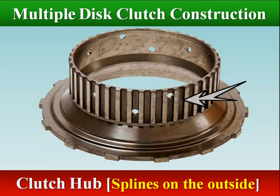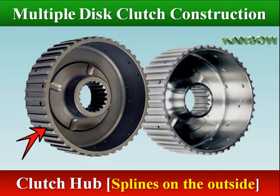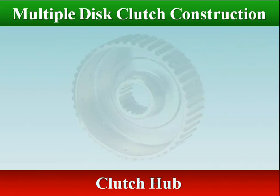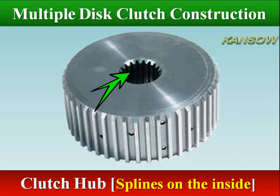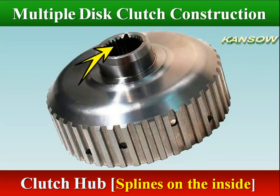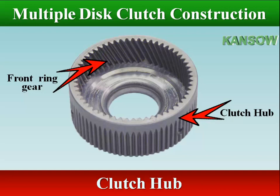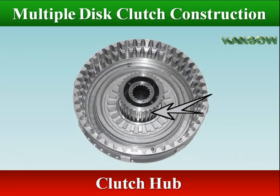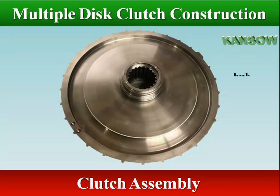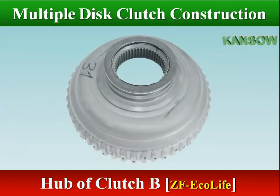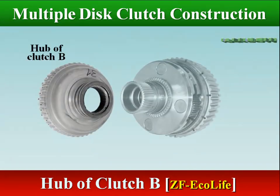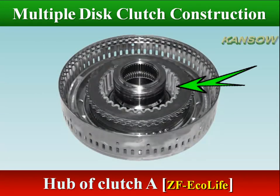The splines on the outside of the central hub mate with the splines on the inner plates, usually friction plates. The splines on the inside of the central hub connect to one or more members of the gear set through a shaft. The central hub of clutch B splines to planet carrier 2, which connects with ring gear 3. The central hub of clutch A is bolted to the drum of clutch B, which is connected to the turbine shaft.